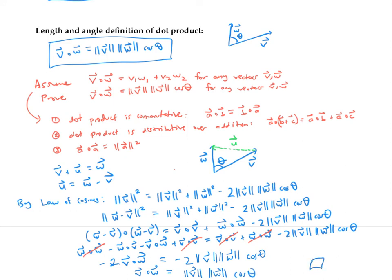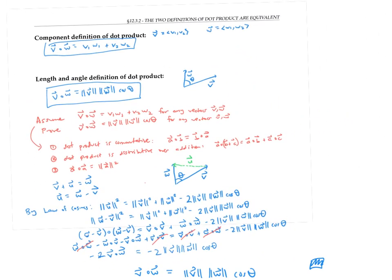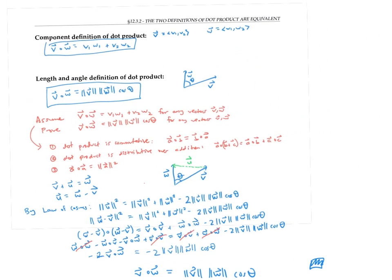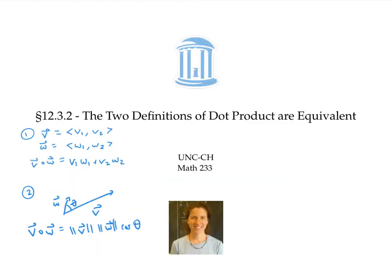So the law of cosines gets us from the component definition of dot product to the length and angle definition of dot product. And that's all for the proof that these definitions are equivalent.